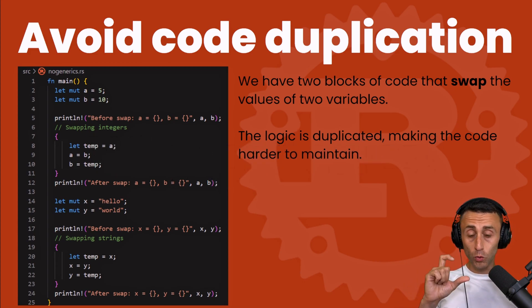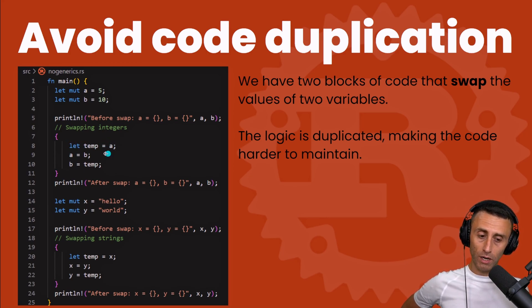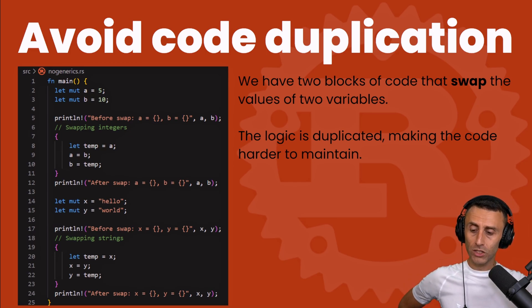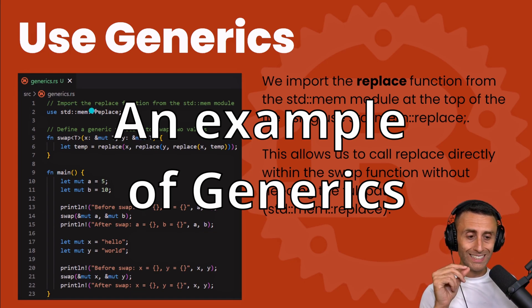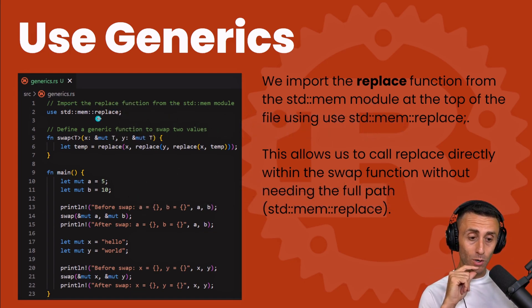For example here, we have two blocks to swap two elements of the same type. But check how much code we have to type here. We have to use an additional variable, a temporary variable, then we have to say a equals b, b equals temp. So this is a lot of work, and check again, we need to do this again when we have two strings. Code duplication is not necessarily bad, but the code is less maintainable. When I want to make some changes, I need to apply these changes to all the parts, and this usually introduces some errors.